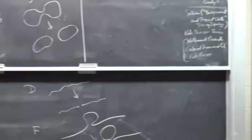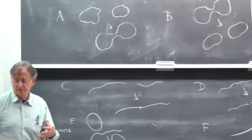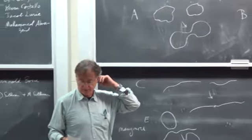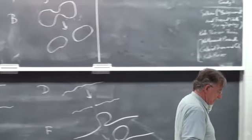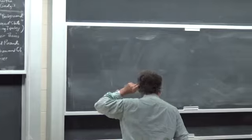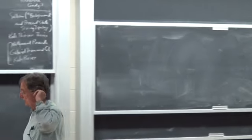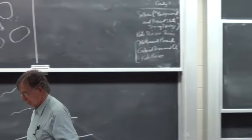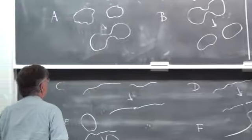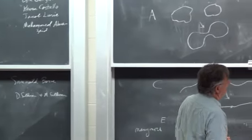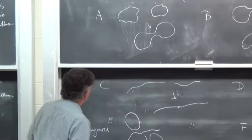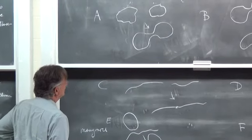The free loop space has a definition in algebraic geometry over curves, and one can imagine doing things there to get things like vertex operator algebras. But I'm going to go back to doing it in the algebraic topology way.